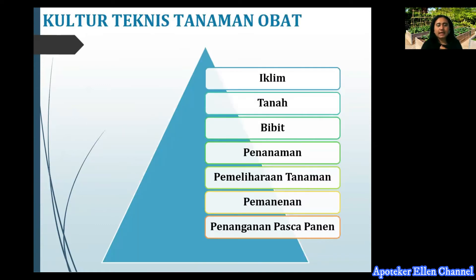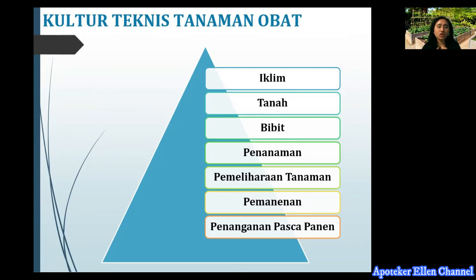Salah satu penunjang keberhasilan pembudidayaan tanaman obat keluarga adalah kultur teknis tanaman obat. Apa saja kultur teknis tanaman obat yang mempengaruhi pembudidayaan toga? Yang pertama adalah iklim, kedua tanah, ketiga bibit, kemudian cara penanaman, cara pemeliharaan tanaman, cara memanennya, dan yang terakhir penanganan lahan setelah dipanen. Ini yang menjadi faktor keberhasilan suatu pembudidayaan toga dilihat dari kultur teknis tanaman obat itu sendiri.